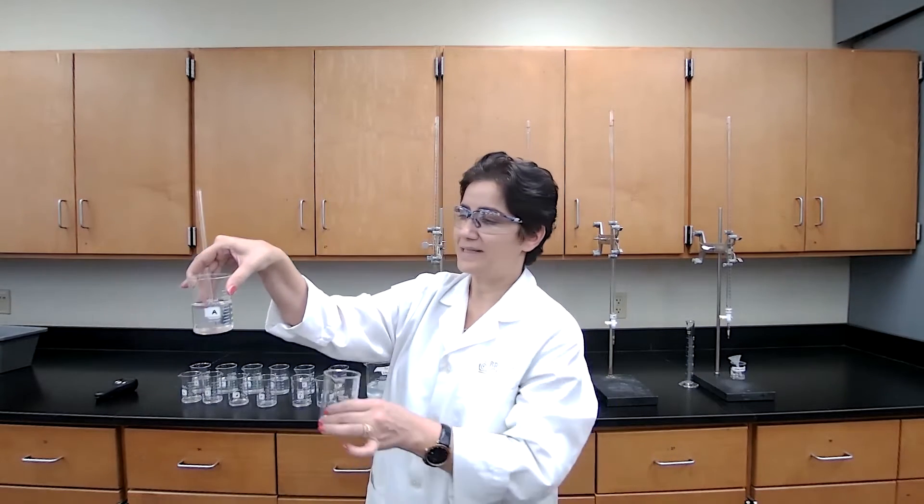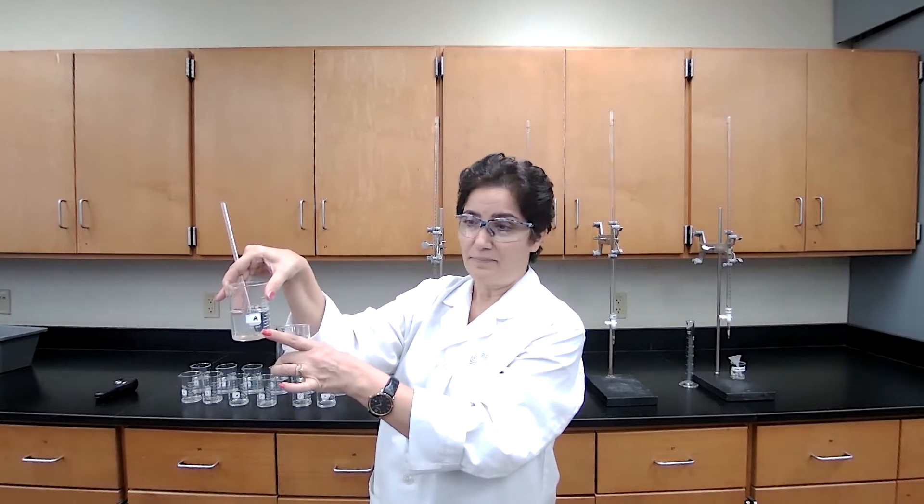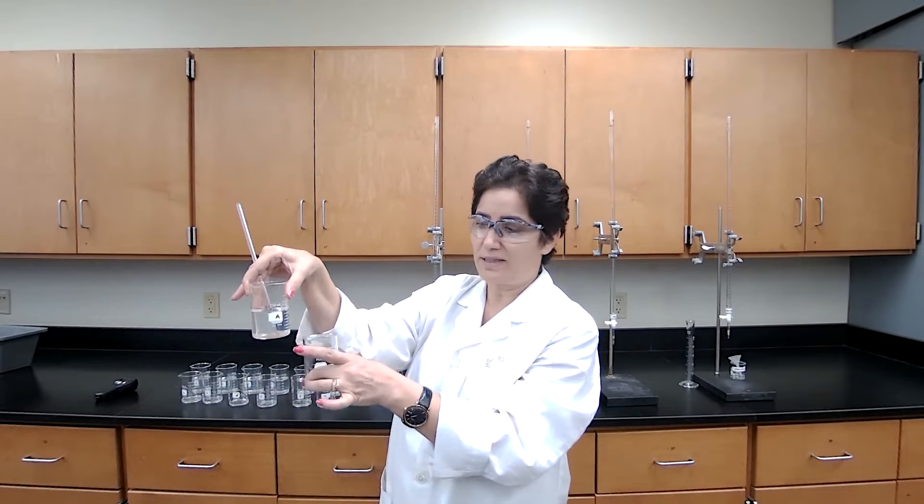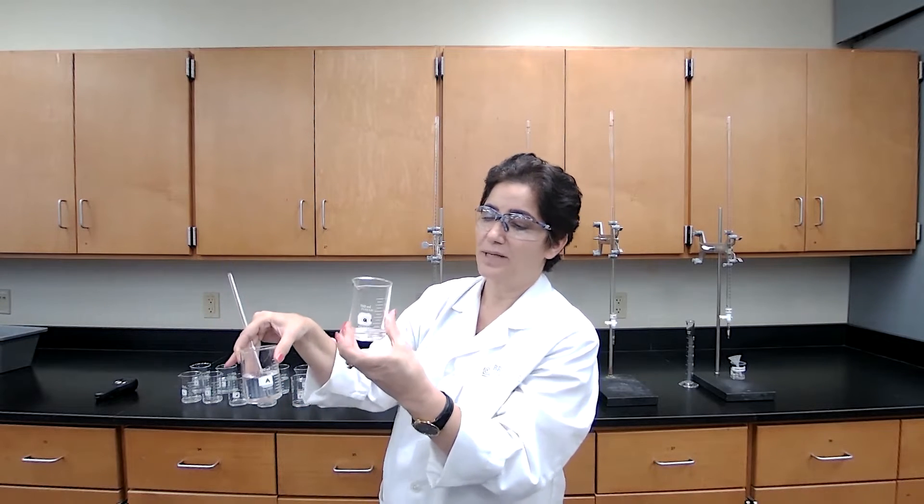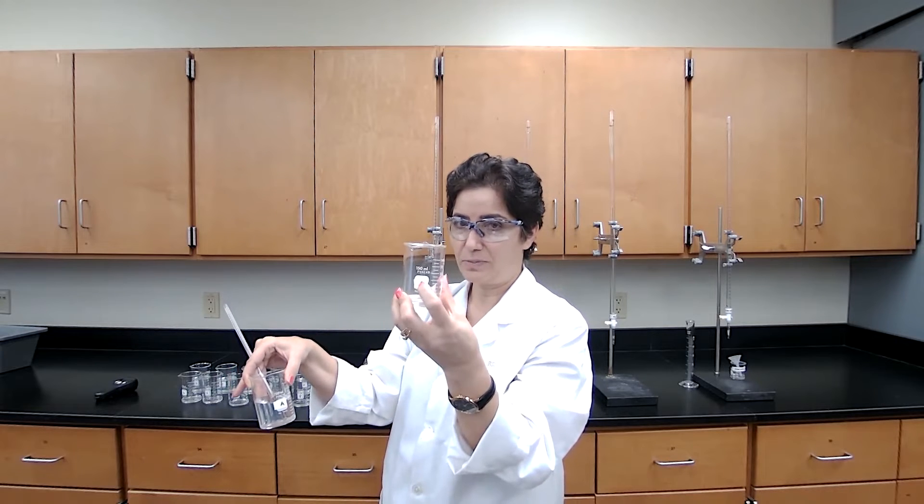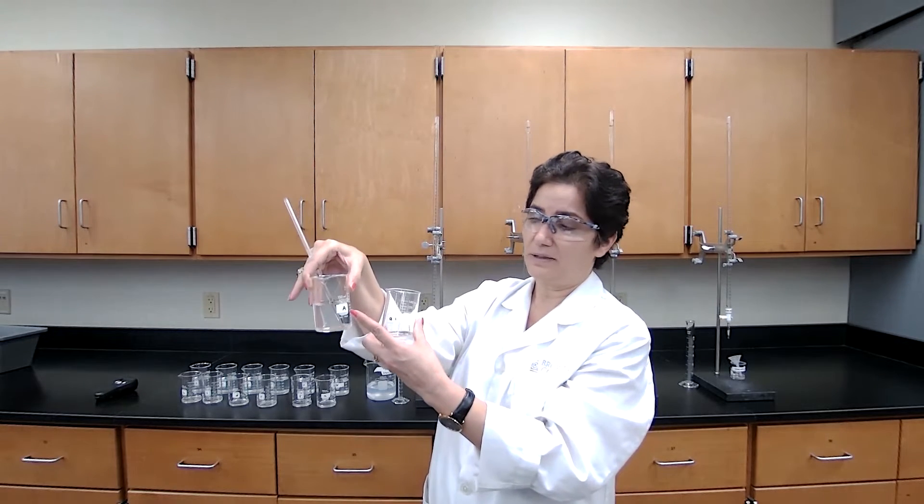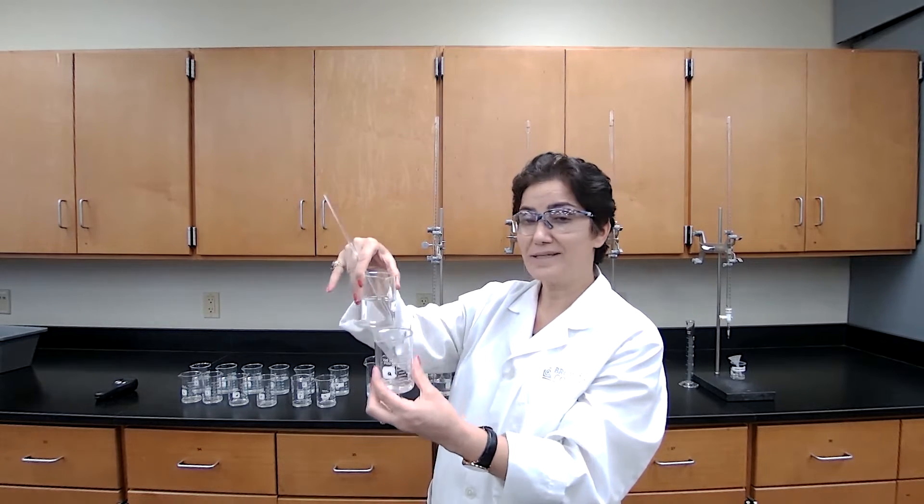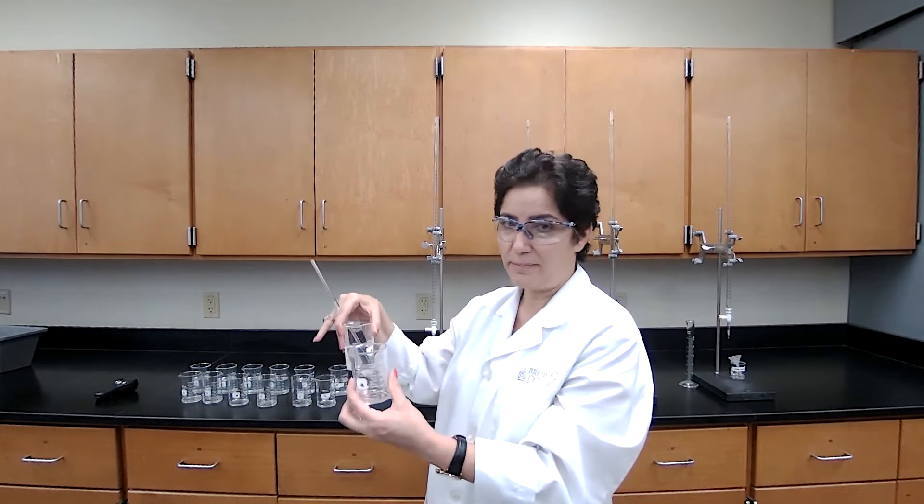I have one that is labeled capital A and the table says what is in there, and we have lowercase a. So I have the iodate solution in this beaker and I have the sulfurous acid with the starch solution and water in the other beaker. When I mix it, as soon as I mix it, I will start the timing.